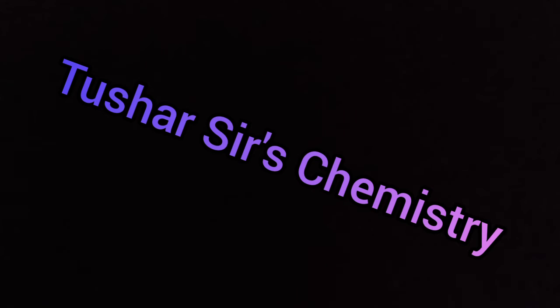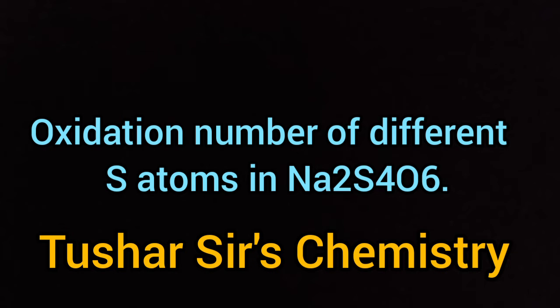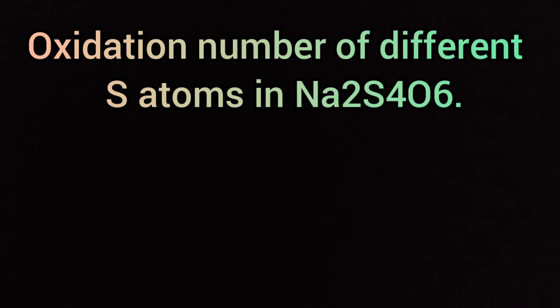Hello, welcome back to my channel. In this video we'll discuss the oxidation number of different types of sulfur atoms present in Na2S4O6. Na2S4O6 is produced from H2S4O6. You see the structure of H2S4O6, this is tetrathionic acid.